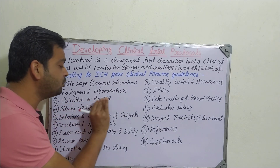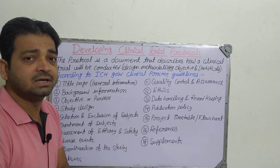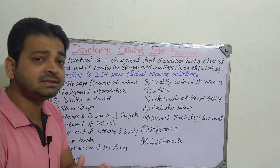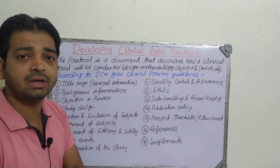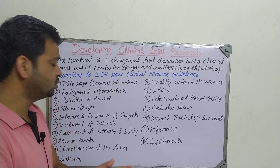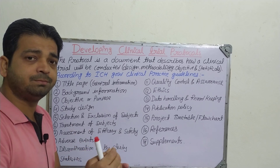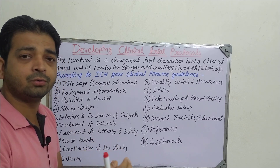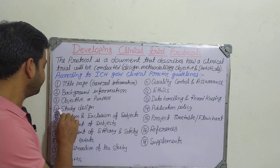The third one is objective or purpose — very, very important. What is the purpose? The purpose is to screen the anti-diabetic activity of a new chemical entity in human volunteers. The objective and purpose should be clearly indicated in your protocol, stating what you are going to do with that particular study.